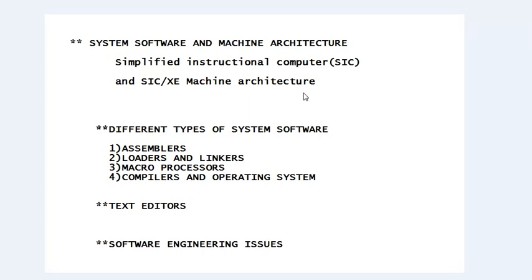We will also study the different types of system software: assemblers, loaders, operating systems, compilers, and macro processors. Additionally, we will discuss text editors, which are also a kind of system software, and at the last part we will discuss some software engineering issues.